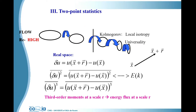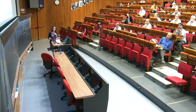One way to understand what happens at scale is to consider increments — differences of a turbulent field u between two points in space separated by distance r. We can calculate moments: second-order and third-order moments. The second-order moment corresponds to the energy at scale r and all smaller scales, and corresponds to the spectra. The third-order moment corresponds to the energy flux at scale r.